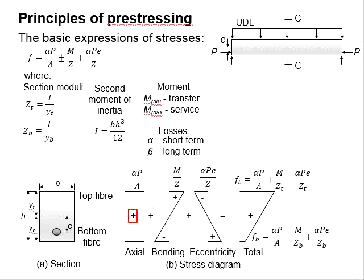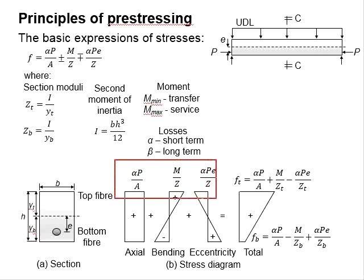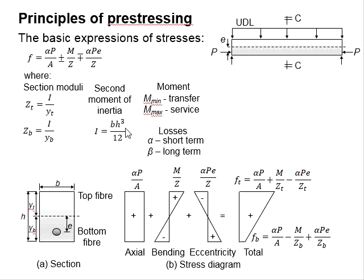The positive value represents compression, while the negative value represents tension. The summation of these equations gives the stress on top of the beam, which is this plus this minus this. As for the stresses at the bottom of the beam, it will be this minus this plus this.